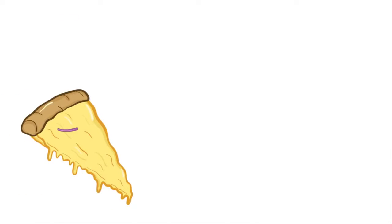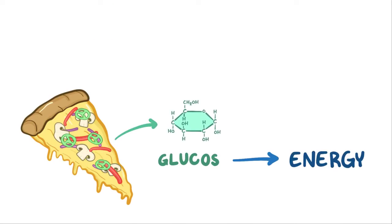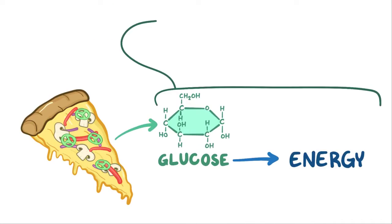Just ate a big slice of pizza with onions, mushrooms, bell peppers, and jalapenos. To pull energy out of the glucose in that pizza, or really any food, requires glycolysis.